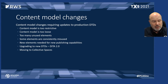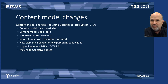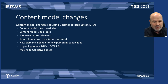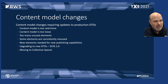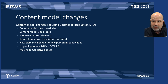With content model changes, we recognize where we need to make updates to production DTDs. This might be because the current model is too restrictive — authors can't do what they need to do and have to work around the DTD — or the model is too loose, resulting in inconsistent tagging and rendering. There may be too many unused elements making the authoring interface clunky, or elements consistently misused, which often points to an opportunity for specialization of your DTDs.